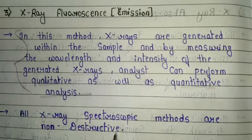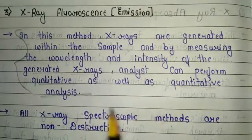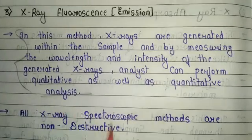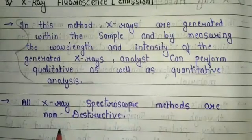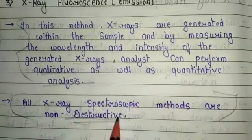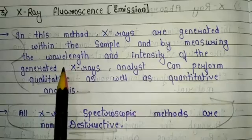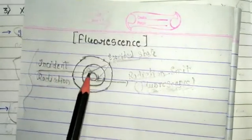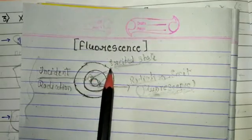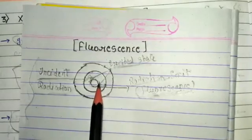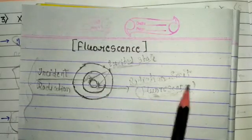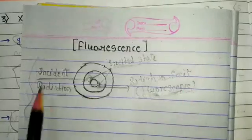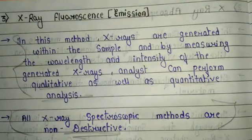X-ray fluorescence is less commonly used compared to the most important method, X-ray diffraction. All X-ray spectroscopic methods are non-destructive — this is a very important point. To recap the concept of fluorescence: when incident radiation strikes an inner-shell electron of an atom, the electron moves to an excited state and goes to the outer shell. After some time it returns to the inner shell, emitting radiation called fluorescence, whose wavelength is higher than that of the incident radiation. This emitted radiation is also called X-ray emission.